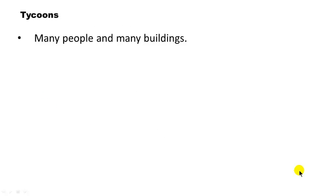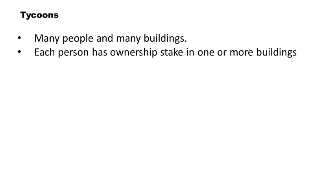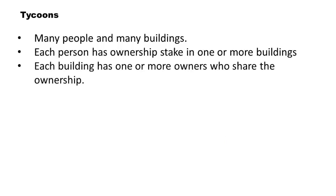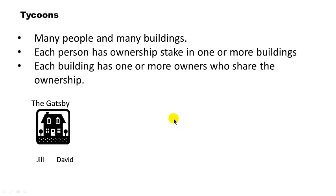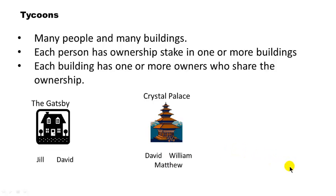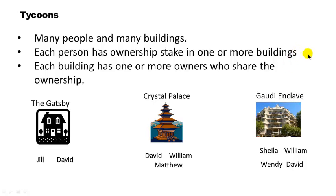Let's take an example. There are lots of business tycoons and lots of buildings. Each tycoon has an ownership stake in one or more buildings, and each building has one or more owners who share ownership. This is clearly a many-to-many relationship. One tycoon can have a stake in many buildings; one building can be partially owned by many different tycoons. For example, the Gatsby is jointly owned by Jill and David. The Crystal Palace is jointly owned by David, William, and Matthew. And the Gaudi Enclave is jointly owned by Sheila, William, Wendy, and David.